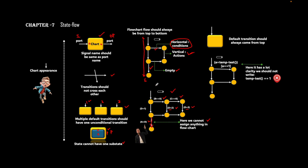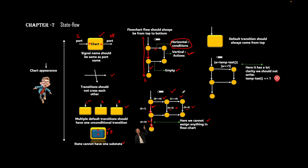Whenever you are defining any transition as a default transition inside a flow chart, it is better to use transitions that fall directly from one junction to another direction, compared to the conditional way. This is better practice for any flow chart. Also, you cannot do the assignment at the final level; if you want to do an assignment you can do it at an earlier level, but not at the last level.